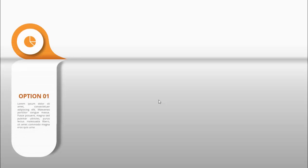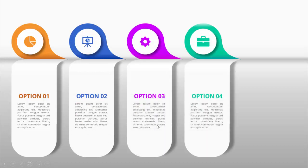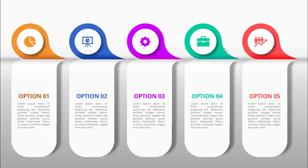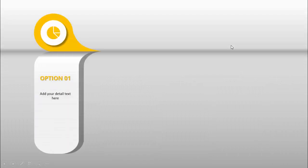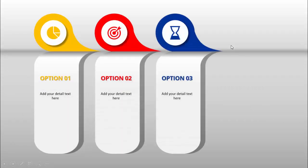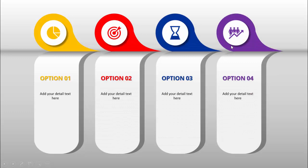In today's tutorial I'm going to show you a very creative five options infographic slide in PowerPoint. When I click, it will show the first option along with icons at the top where you can add detailed text with a shadow effect. Clicking again shows the second, third, fourth, and fifth options in different colors. You can also make it four options if you want.